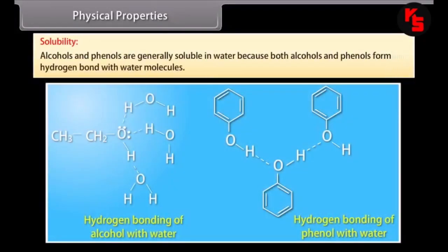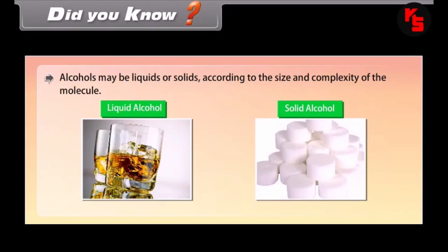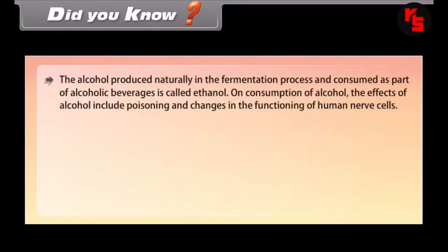Solubility: alcohols and phenols are generally soluble in water because both form hydrogen bonds with water molecules. Alcohols may be liquids or solids according to the size and complexity of the molecule. The alcohol produced naturally in fermentation and consumed in alcoholic beverages is called ethanol. On consumption of alcohol, the effects include poisoning and changes in the functioning of human nerve cells.